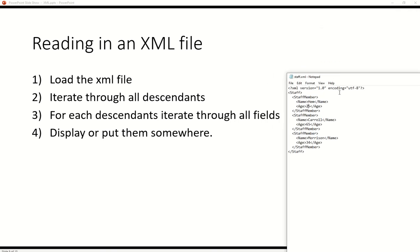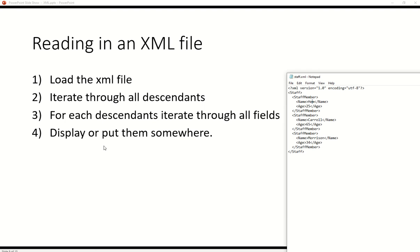In our scenario, the descendants are the staff members — the root is staff, but the descendants are the staff members. Then we're going to iterate through the fields of each descendant, and we need to know what these tags are so we can load them in. After that, we'll display them or put them somewhere in memory.